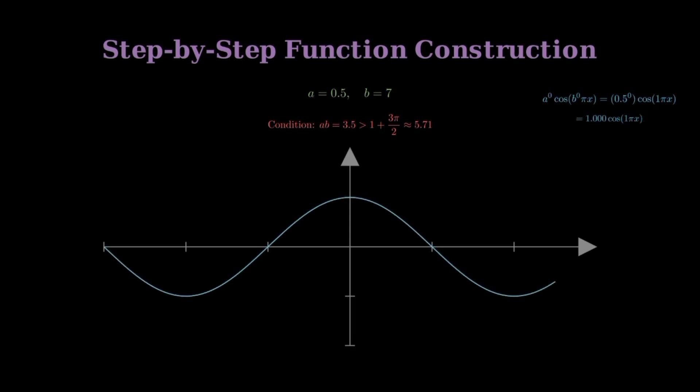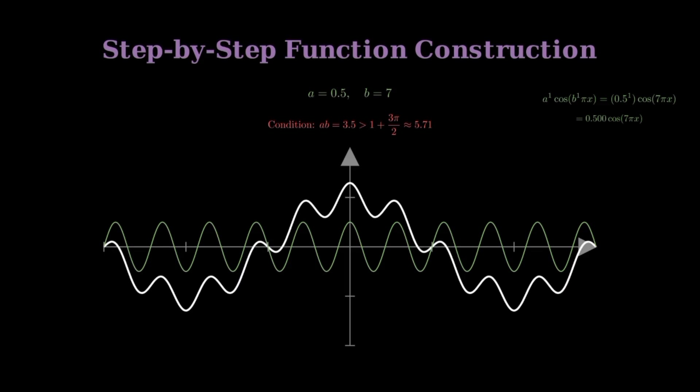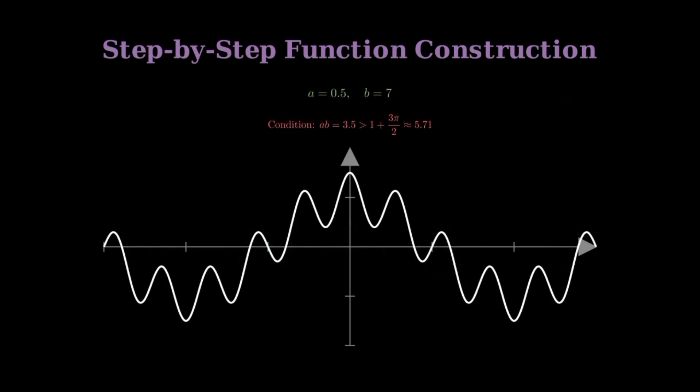Watch as we construct each term individually. The first term is a to the 0 power times cosine of b to the 0 power times pi x. This simplifies to 1 times cosine of pi x, a simple cosine wave. The second term is a to the 1st power times cosine of b to the 1st power times pi x, which becomes 0.5 times cosine of 7 pi x.